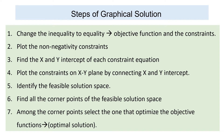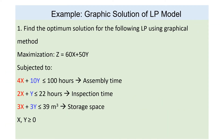If it is a minimization problem, the optimum solution makes the objective function Z as small as possible. If it is a maximization problem, the optimum solution makes the objective function Z as large as possible. Now let's proceed to do an example: find the optimum solution for the following linear programming problem using the graphical method.